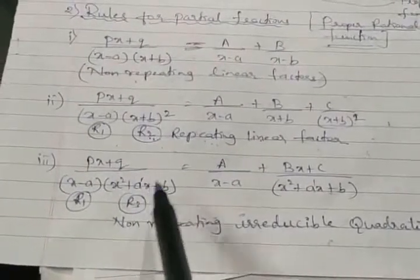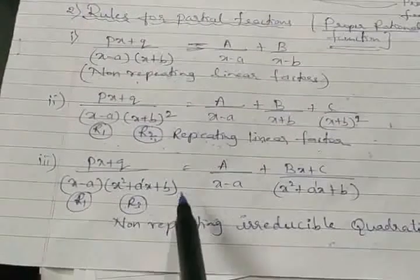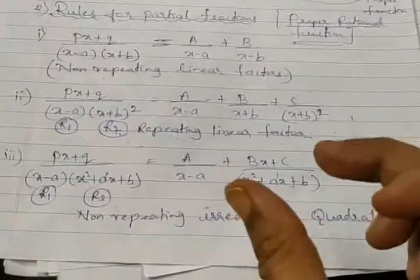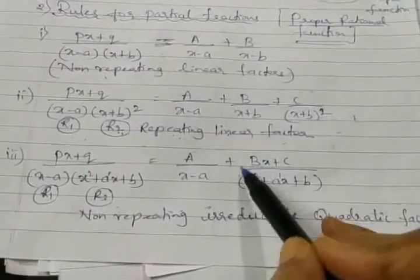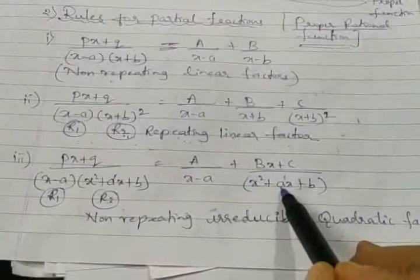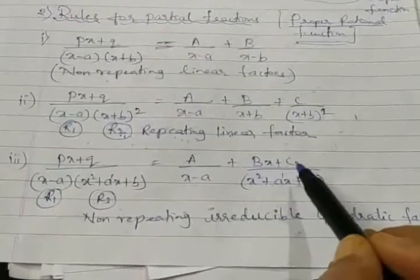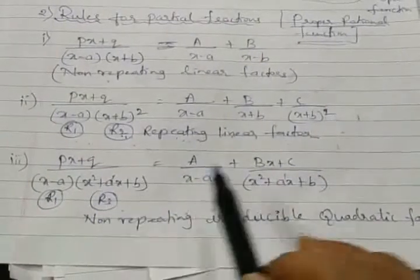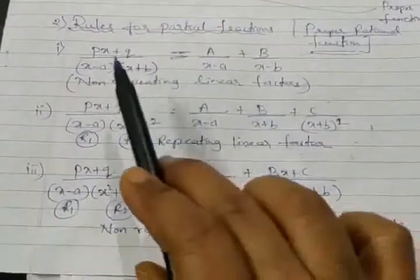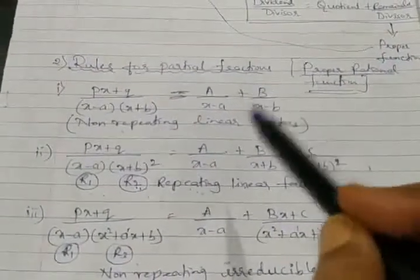For rule 3: for the non-repeating linear factor part, claim A upon (x minus a) as in rule 1. For the irreducible quadratic factor (x² + a'x + b), since it is degree 2, two constant terms B and C exist - but they are not separate, they are written together as (Bx + C) divided by (x² + a'x + b). So the numerator for a quadratic factor is written as Bx + C, not just a single constant.